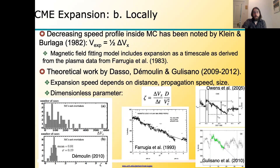We can also measure expansion locally. The basic idea, from work going back to the early 1980s, is that as a CME passes a spacecraft, you can see a decreasing speed profile. Half of this speed decrease corresponds to the expansion speed — the front is moving away from center with an expansion speed, and the back is also moving away from center with the same expansion speed. So half of the front-to-back speed difference is the expansion speed. Magnetic flux rope models that incorporate this expansion speed were developed by Farrugia and colleagues in 1993.